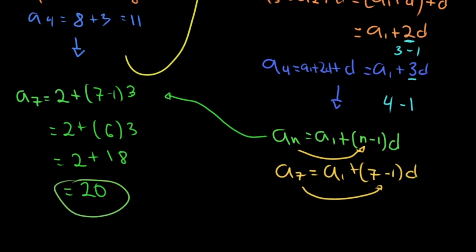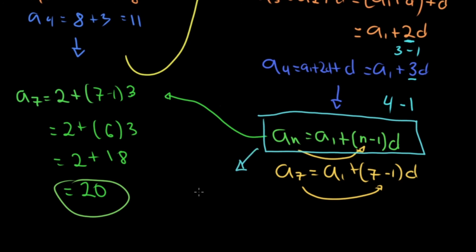So the general formula for finding the nth term is: a sub n equals a sub 1 plus (n minus 1) times d. With this formula, you no longer need to skip count or keep adding the common difference. For the 100th term, just substitute n equals 100. For the 300th term, substitute n equals 300. Thank you for watching! If there's any part that confused you, let me know in the comments.